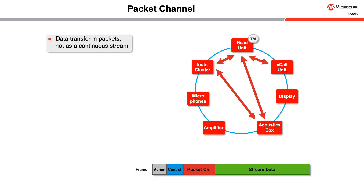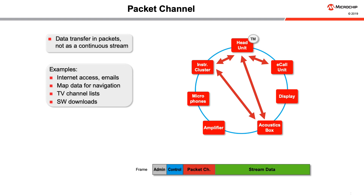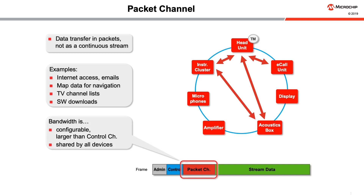The packet channel is used for data exchanges which need more bandwidth than is available on the control channel. Typical examples include Ethernet frame IP data, TV channel lists, album art or graphic images, emails, web pages, phone book directories, map data for navigation, and software downloads. The size of the packet channel — the number of bytes per frame reserved for packet data — is typically configured at system startup and can be up to 116 bytes per frame in iNICnet 50 UTP, or up to 372 bytes per frame in networks having 150 megabits per second, offering more than 100 megabits per second of bandwidth for packet data transmission. The available bandwidth on the packet channel has to be shared by all devices on the network.